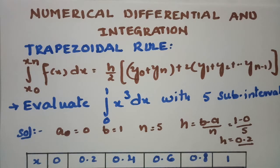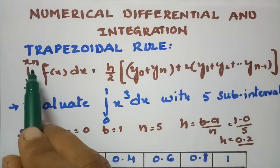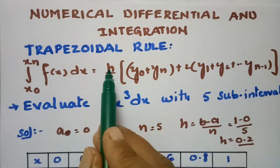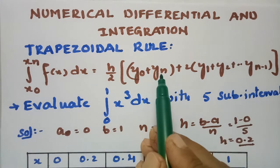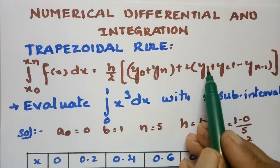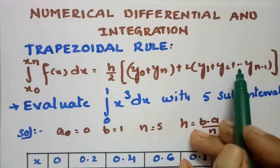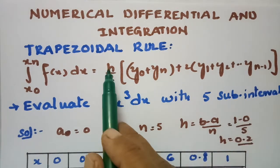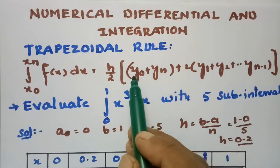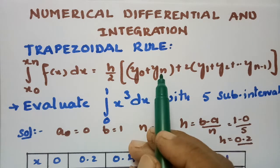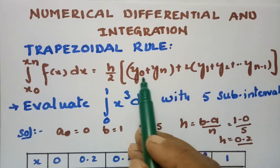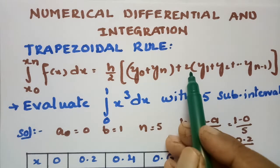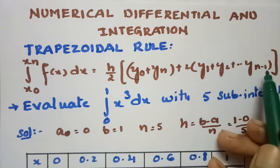Today's topic is the trapezoidal rule, which comes from numerical differentiation and integration. According to the trapezoidal rule, the integral from x0 to xn of f(x) dx is equal to h/2 times (y0 plus yn) plus 2 times (y1 + y2 + y3 + ... + yn-1). In other words, it is h/2 into the sum of the first and last ordinate, plus 2 times the sum of the remaining ordinates.